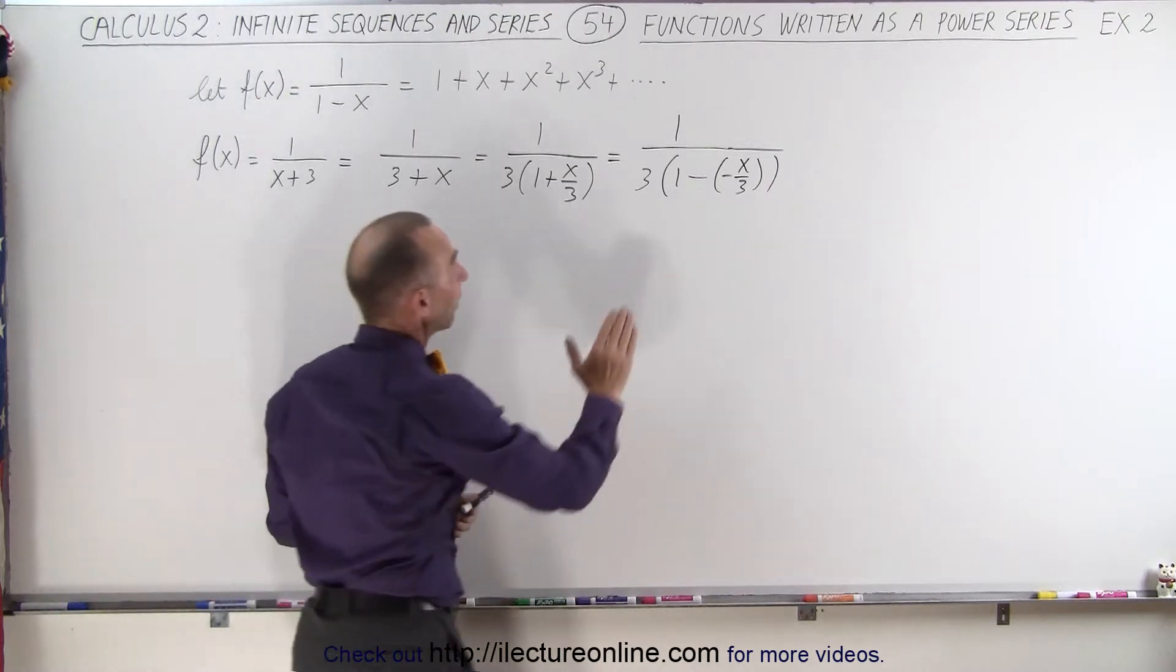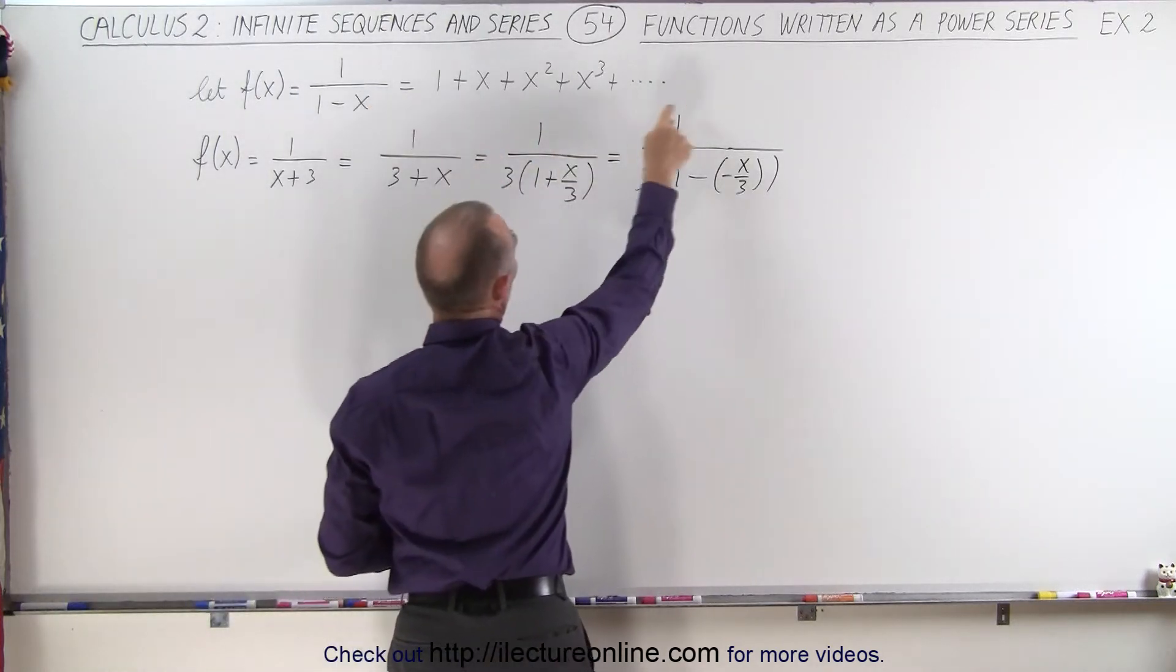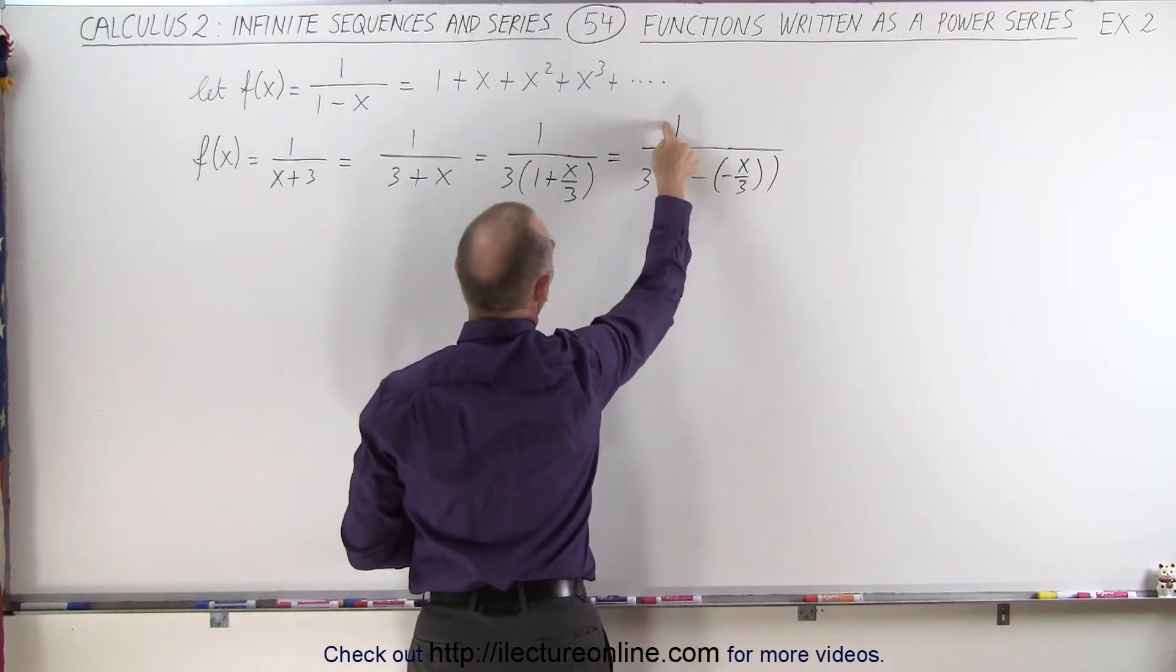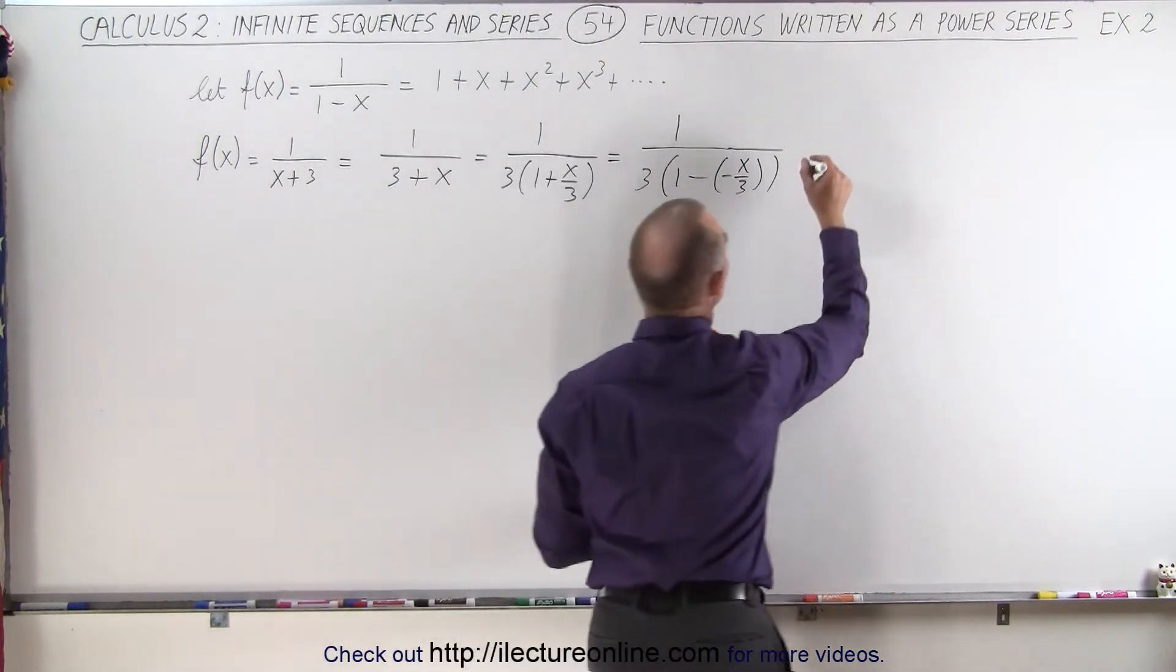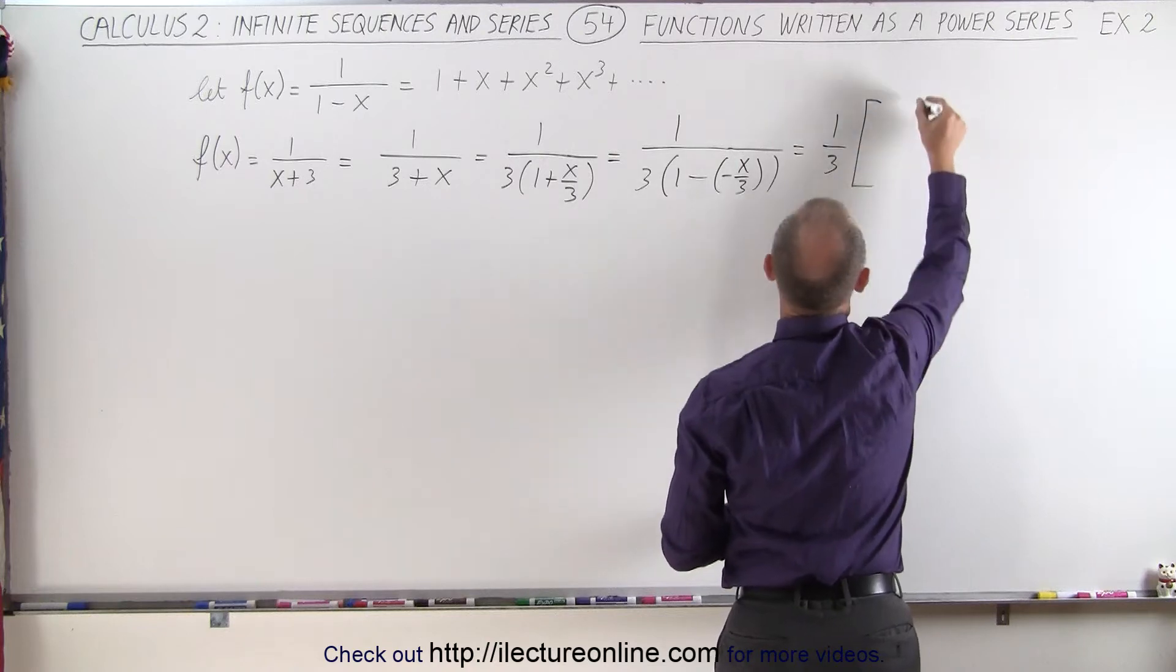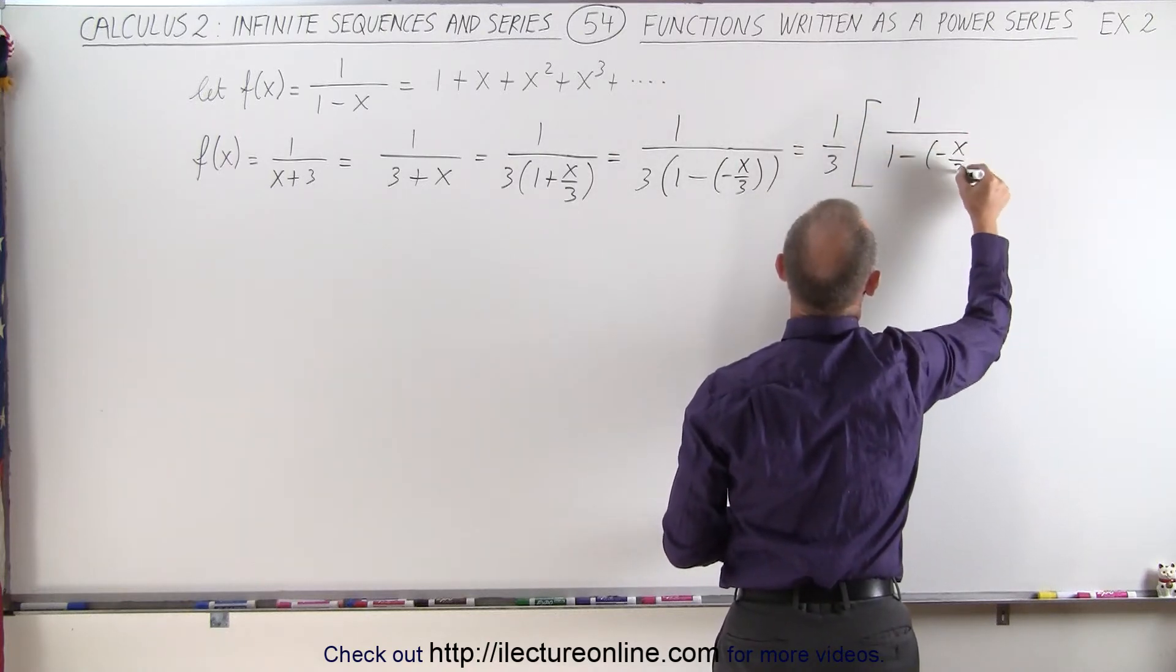Now notice that we have this portion right here, looks the exact same format as this, 1 over 1 minus some quantity. But we have still 1 over 3 there, but that's okay. We can now say that this can be written as 1 over 3 times 1 over 1 minus, minus x over 3.